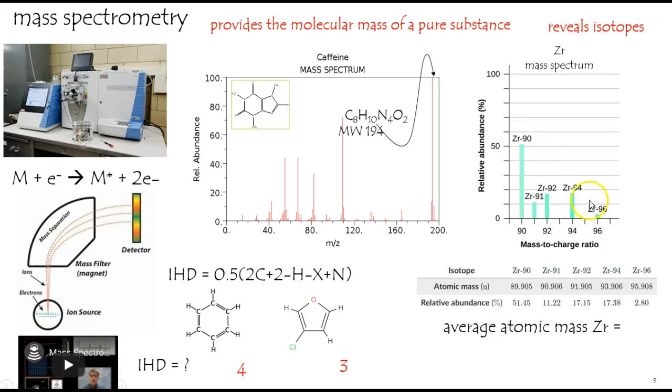This one has the greatest number of neutrons, this one has the weakest, and the abundance is right there. And all you have to do is do a weighted average and you can get the average mass. I think it's going to be a little closer to 90 than 96, since this is the most abundant isotope.